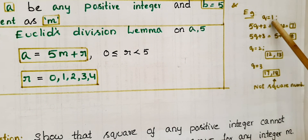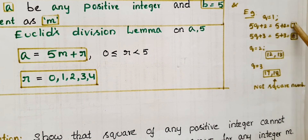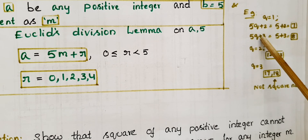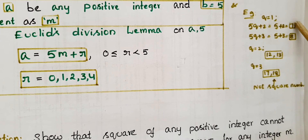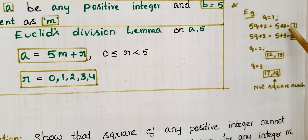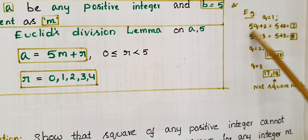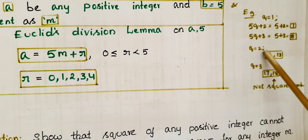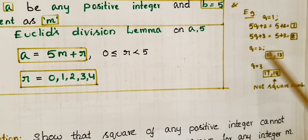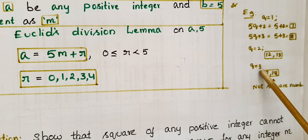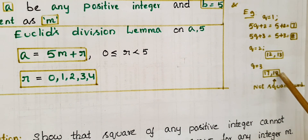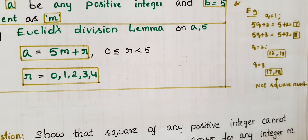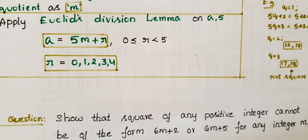You can verify this by applying q equal to 1: 5 into 1 plus 2 is 7, and 5 into 1 plus 3 is 8 — these two are not square numbers. If q equals 2, you get 12 and 13, also not square numbers. If q equals 3, you get 17 and 18, which are also not perfect squares. So the square of any positive integer cannot be in the forms 5q plus 2 or 5q plus 3.